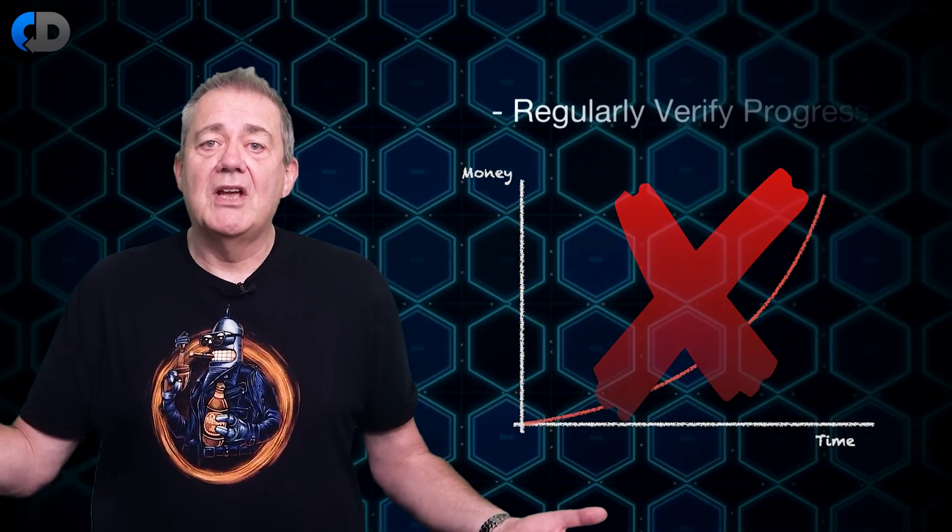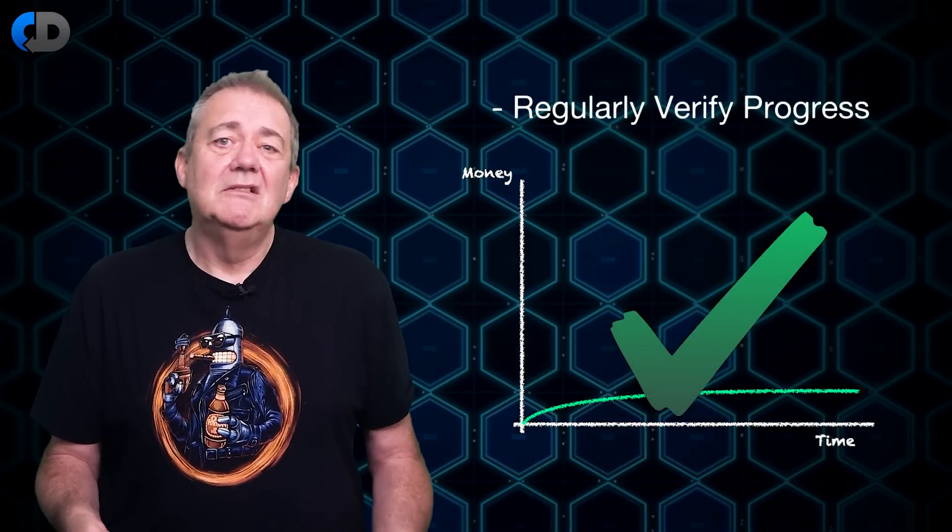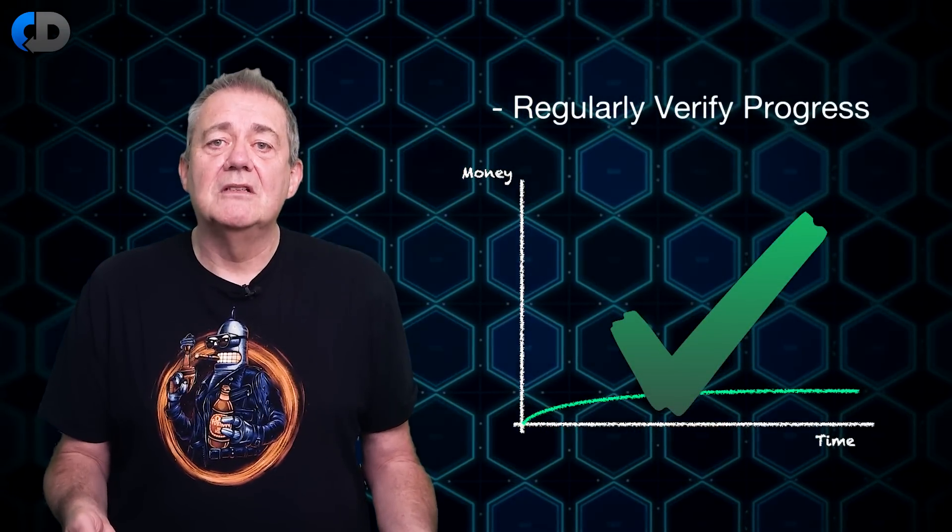We need to flatten the cost of change curve so that whatever we change whenever we change it it's going to take a similar amount of effort and time. So at the start of our ideal software development we won't have and don't need to have all of the answers because if we make a mistake we'll be able to spot it and correct it. So in our ideal we want to get the fundamentals in place, whatever they may be, in a way that we can build on top of them.